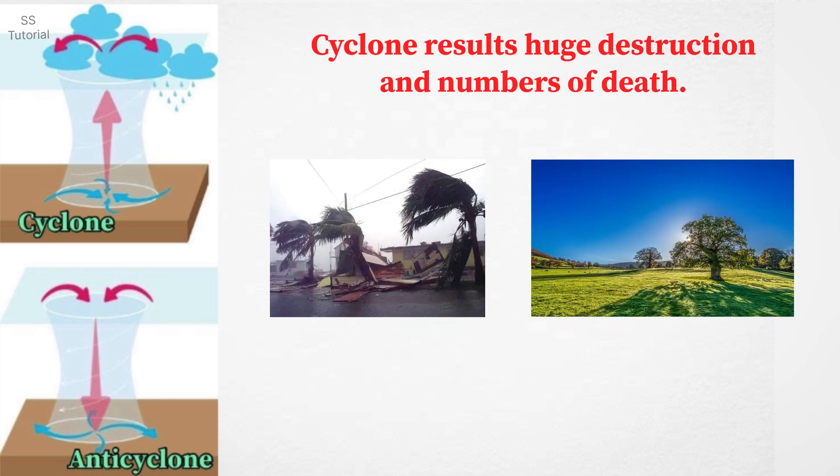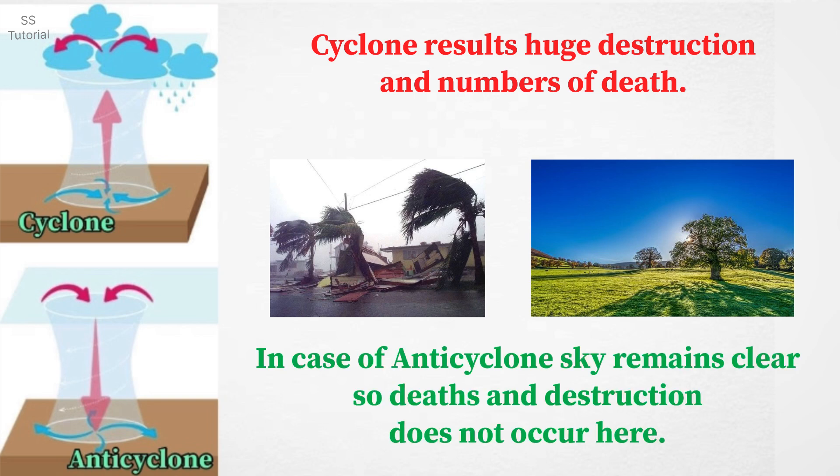Cyclone results in much destruction and causes numbers of death, whereas in case of anticyclone, sky remains clear and destruction and death does not occur.